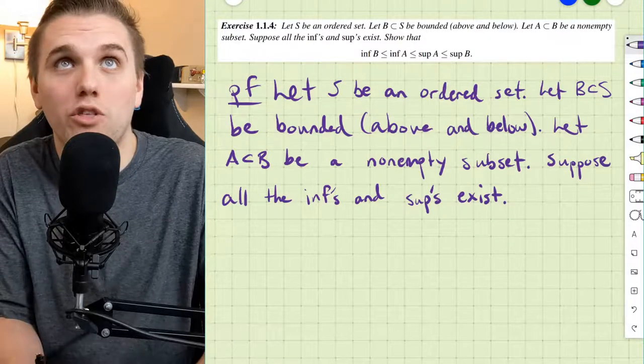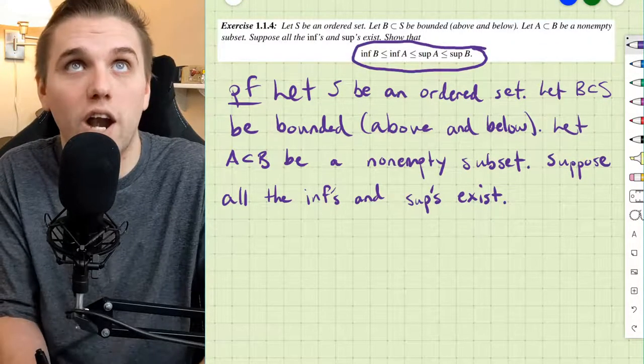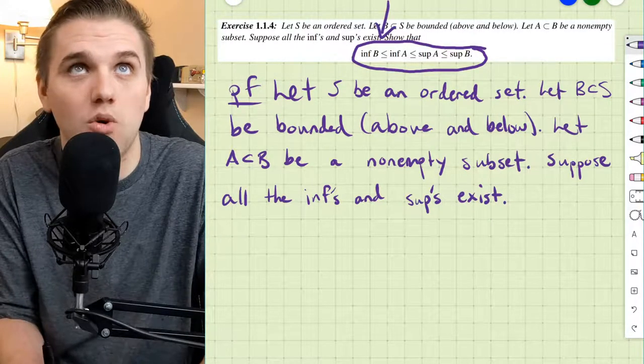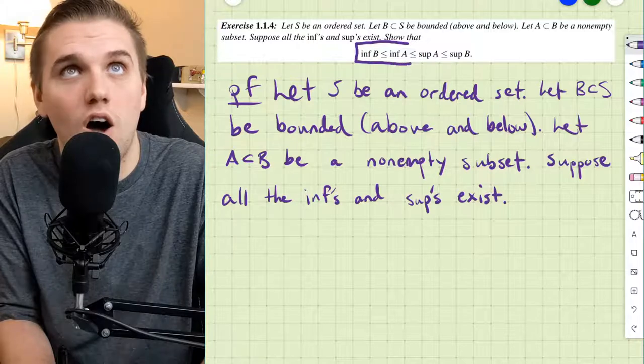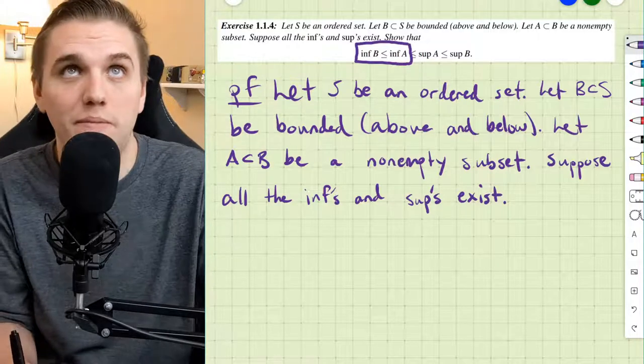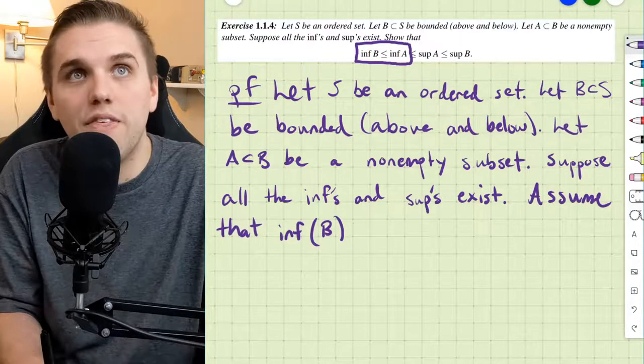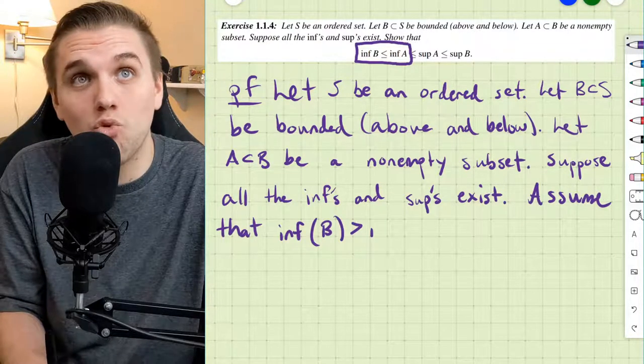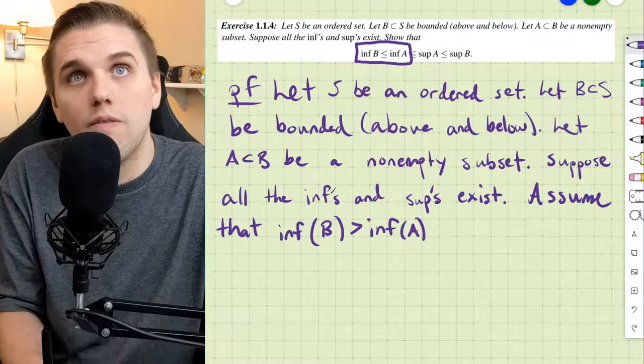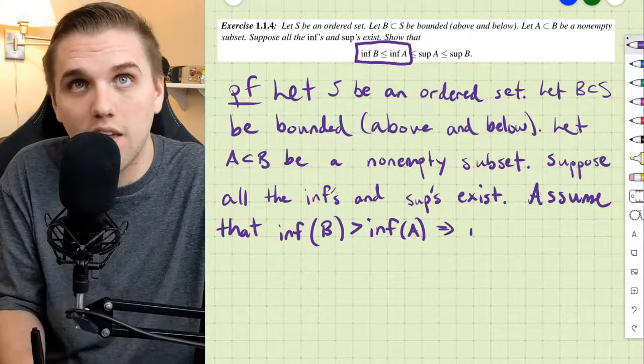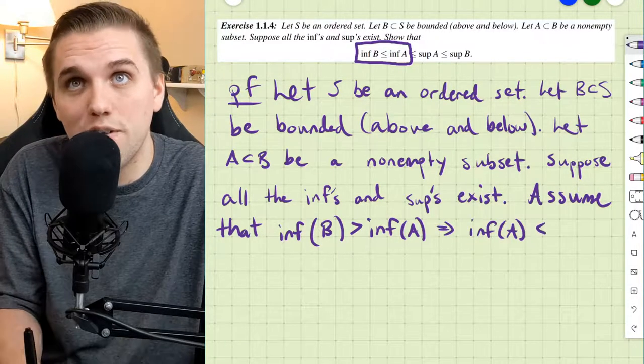Now, we're going to work through proving this inequality one at a time. We're going to start with this inequality on the left here. So right now, we're just focusing on proving that statement. To prove this statement, we're going to assume that the infimum of B is actually greater than the infimum of A. Or, written differently, the infimum of A is less than the infimum of B.